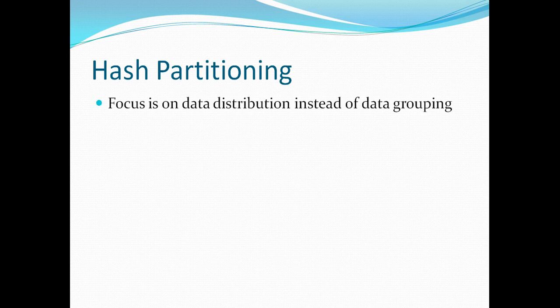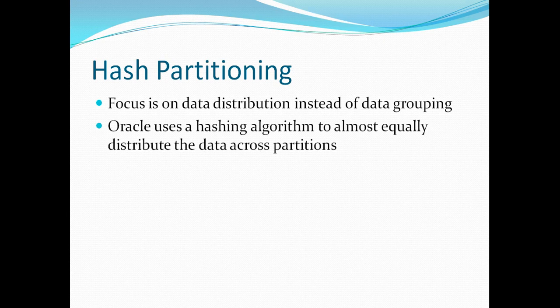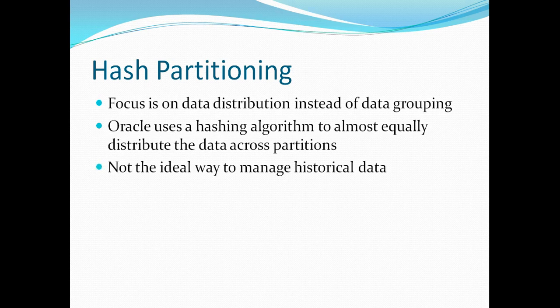Oracle uses a hashing algorithm to equally distribute data across partitions based on the partition key we specify. This is not a great approach for managing historical data, which was the case with range partitioning where we had different partitions for different date ranges — making it easy to query or drop a partition for a particular date range. With hash partitioning, data is randomly distributed, and we will see that with our transaction demo table.